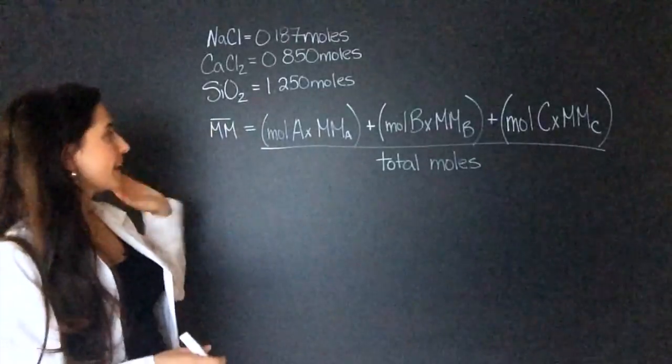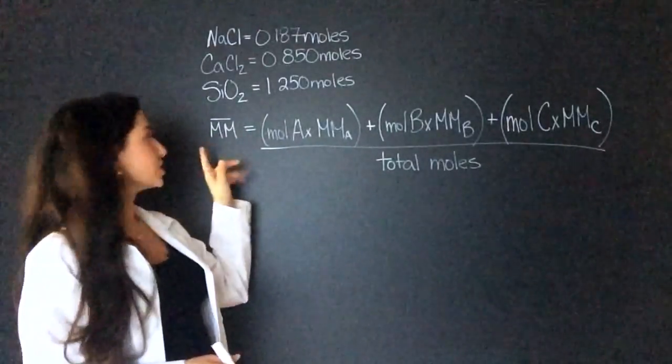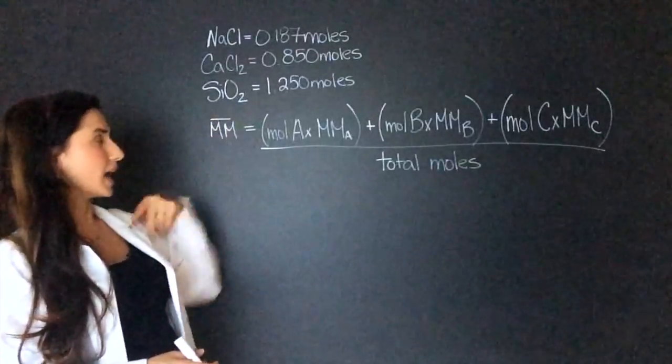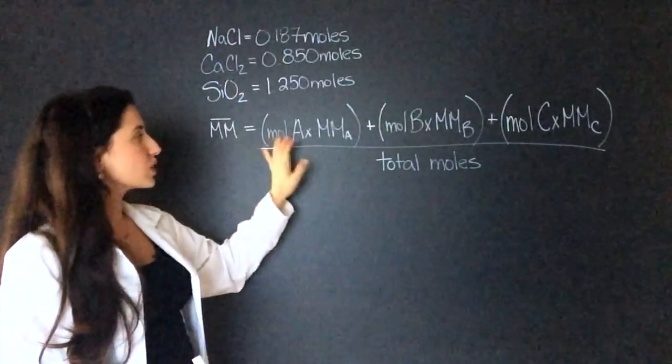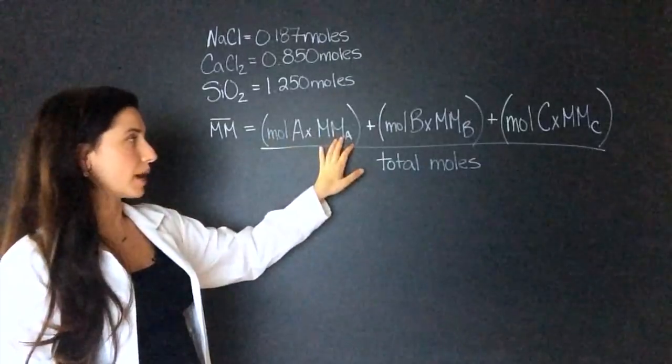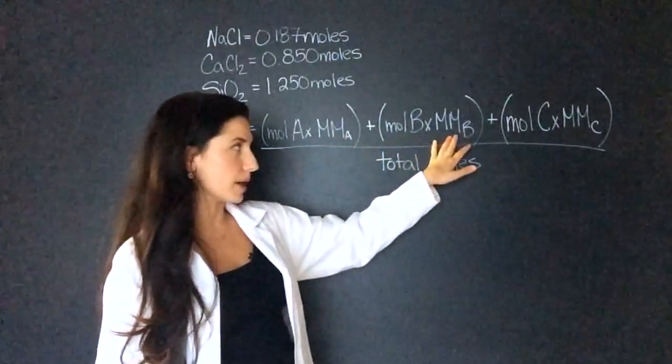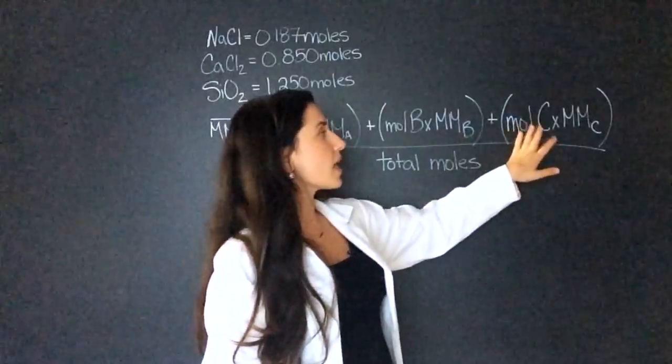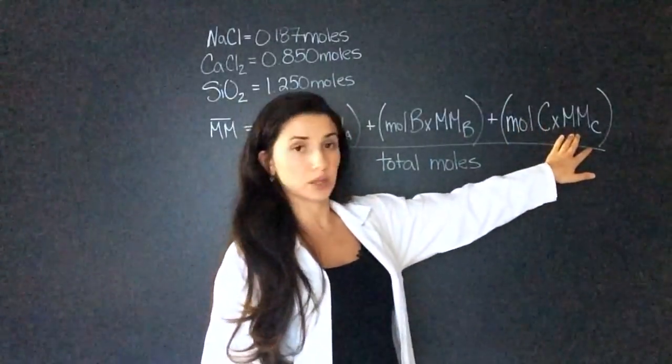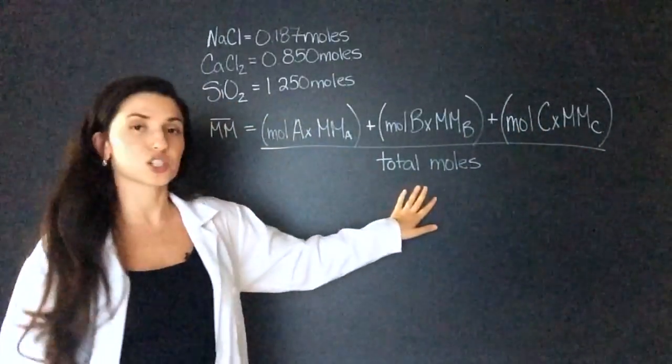If you look at the equation for average molar mass, which is just the molar mass with the line on top, it has the moles of A times the molar mass of A plus the moles of B times the molar mass of B plus the moles of C times the molar mass of C divided by the total moles.